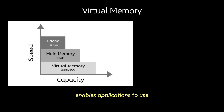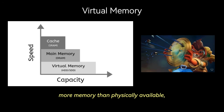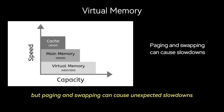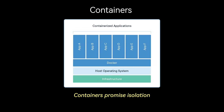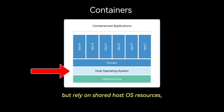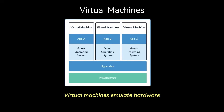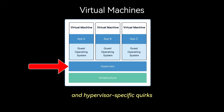For example, virtual memory enables applications to use more memory than physically available, but paging and swapping can cause unexpected slowdowns. Containers promise isolation but rely on shared host OS resources, leading to CPU throttling or out-of-memory killer events. Virtual machines emulate hardware but introduce performance overhead and hypervisor-specific quirks.